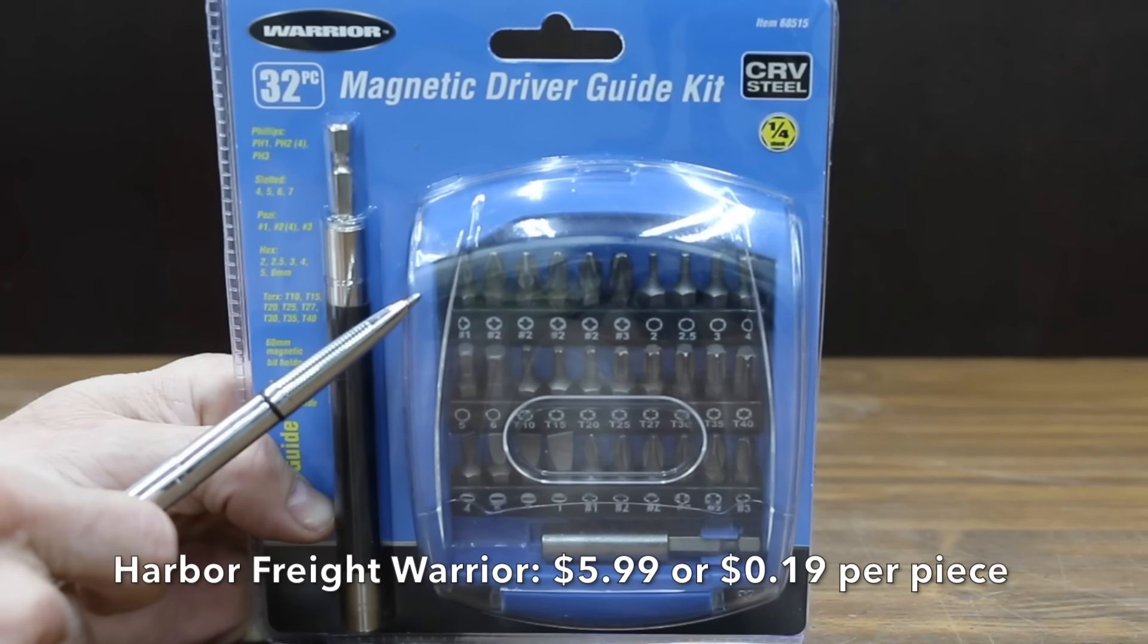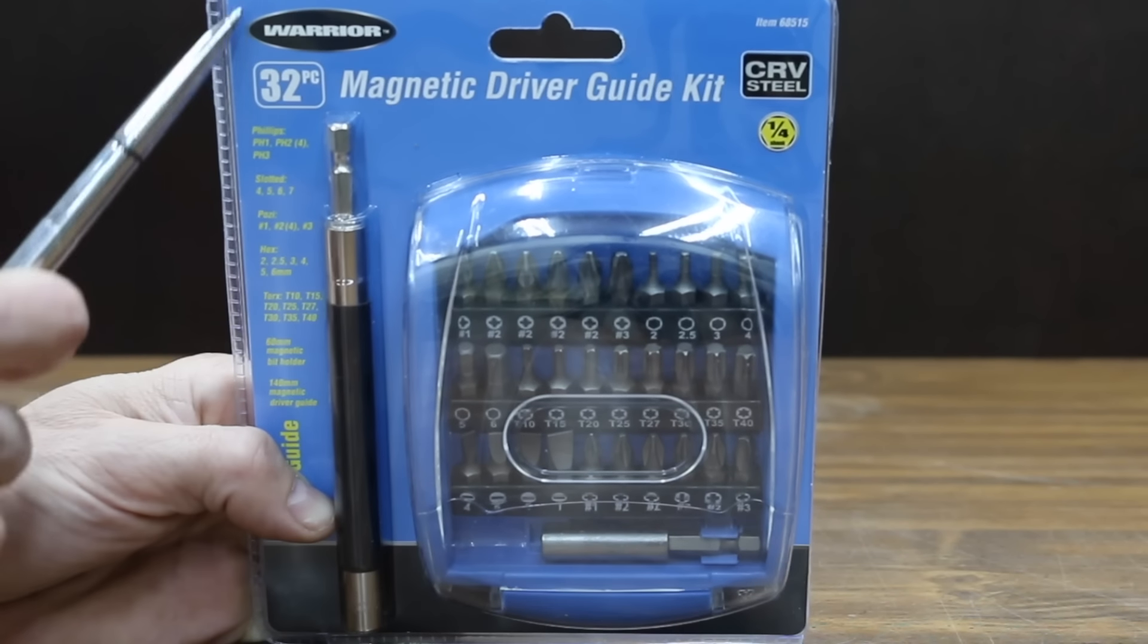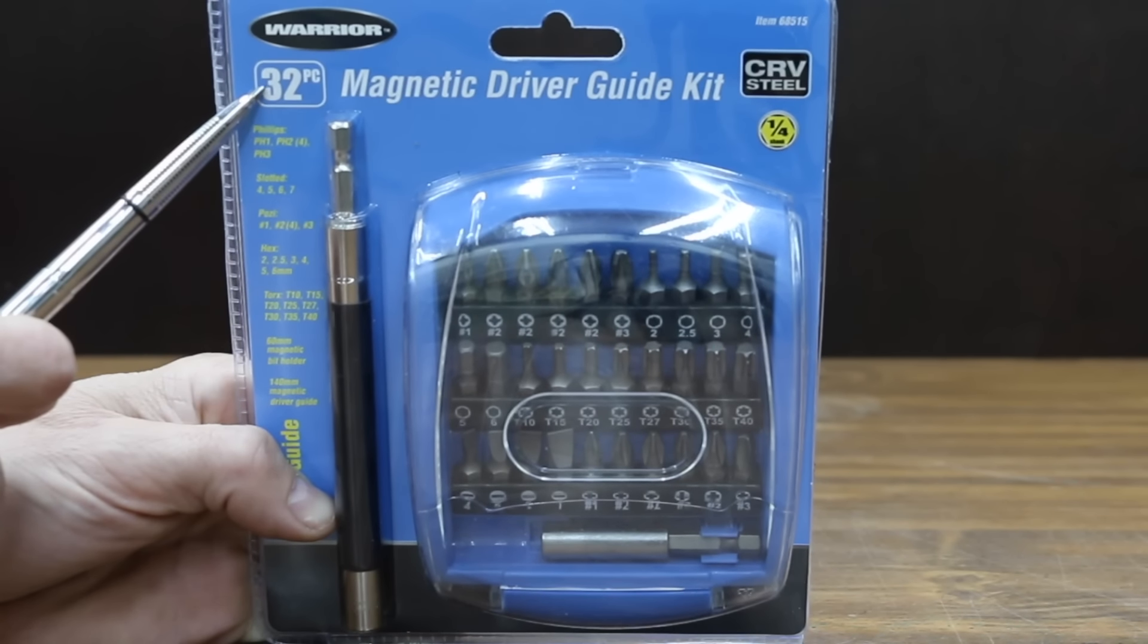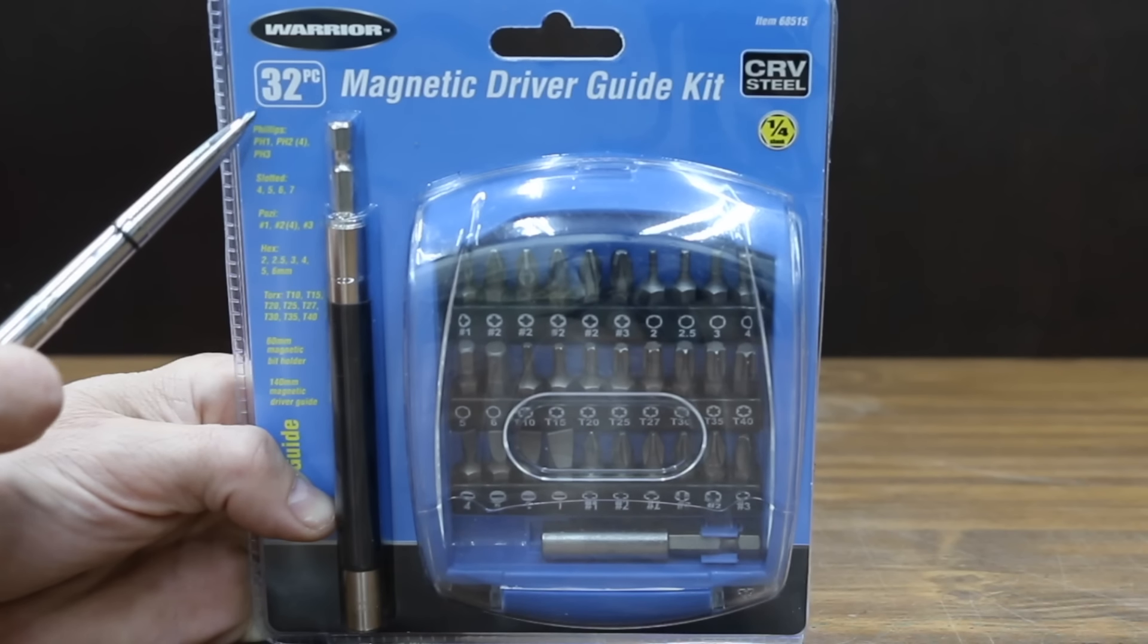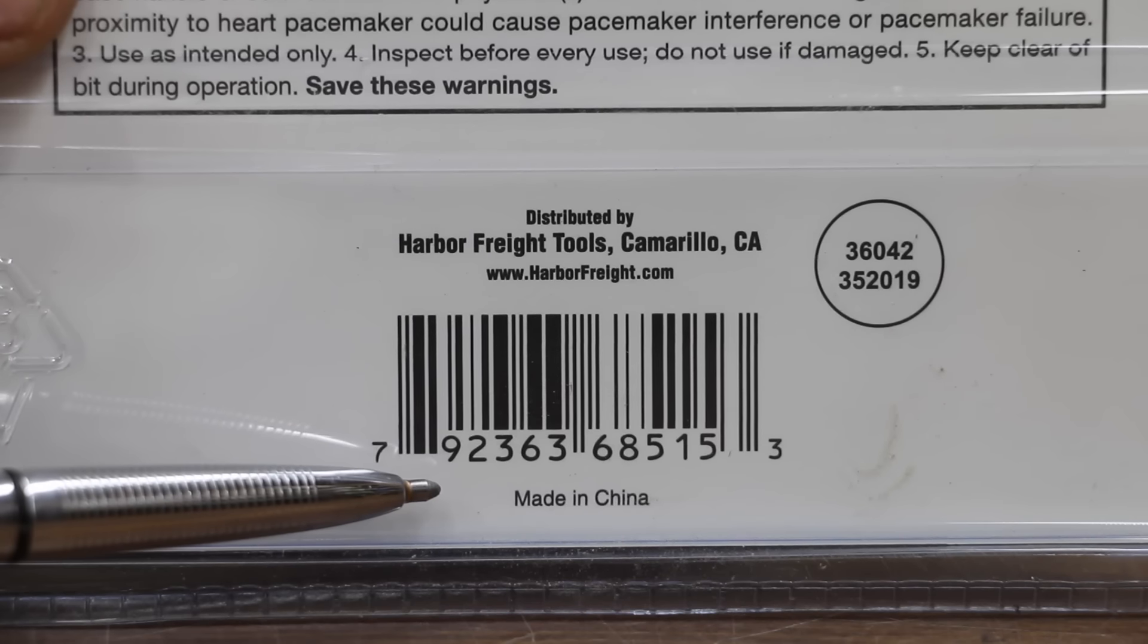Costing only $5.99, the least expensive brand we'll be testing is this Warrior brand 32-piece set. That's only 19 cents per piece. They're constructed of chrome vanadium. Made in China.